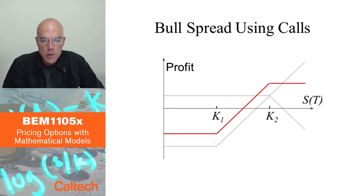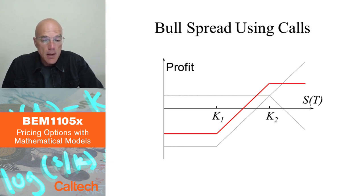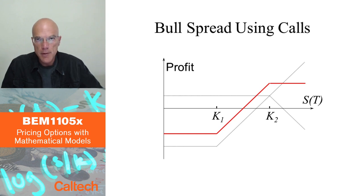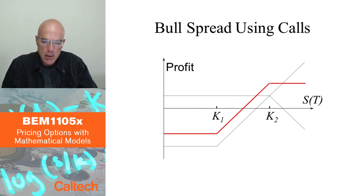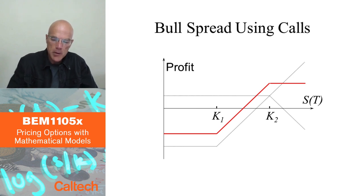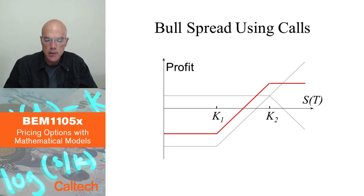A bull spread, as the name suggests, would pay if the stock goes up, if the market is in its bull stage. This graph shows it done using call options, but there are different ways you can do this.